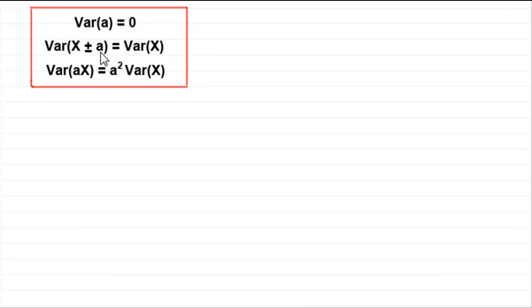If X is a random variable and a is a constant, then it can be shown that the variance of any constant is always equal to zero. And if you add or subtract a constant from a random variable X, then the variance of X plus or minus that constant always equals the variance of X.